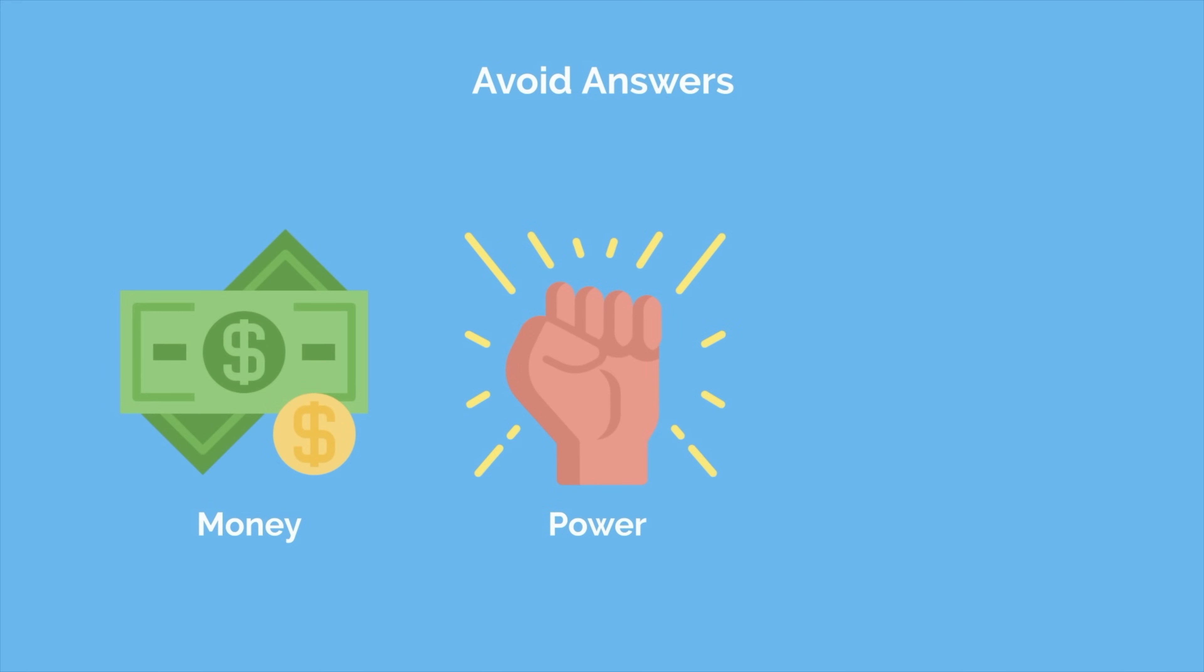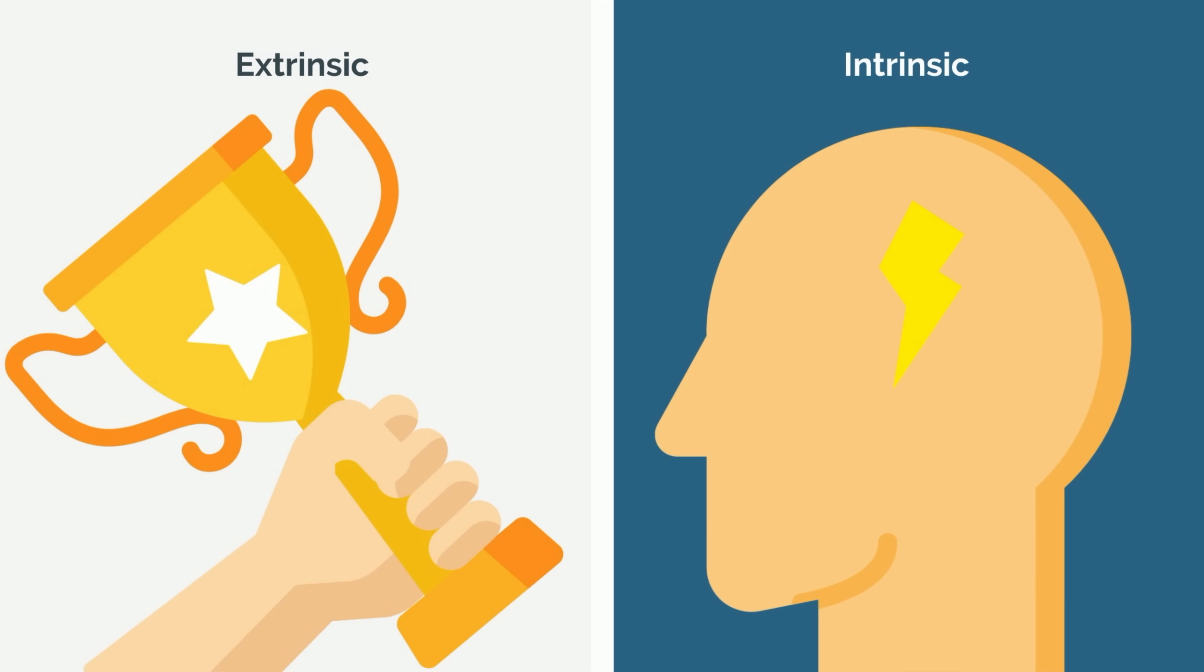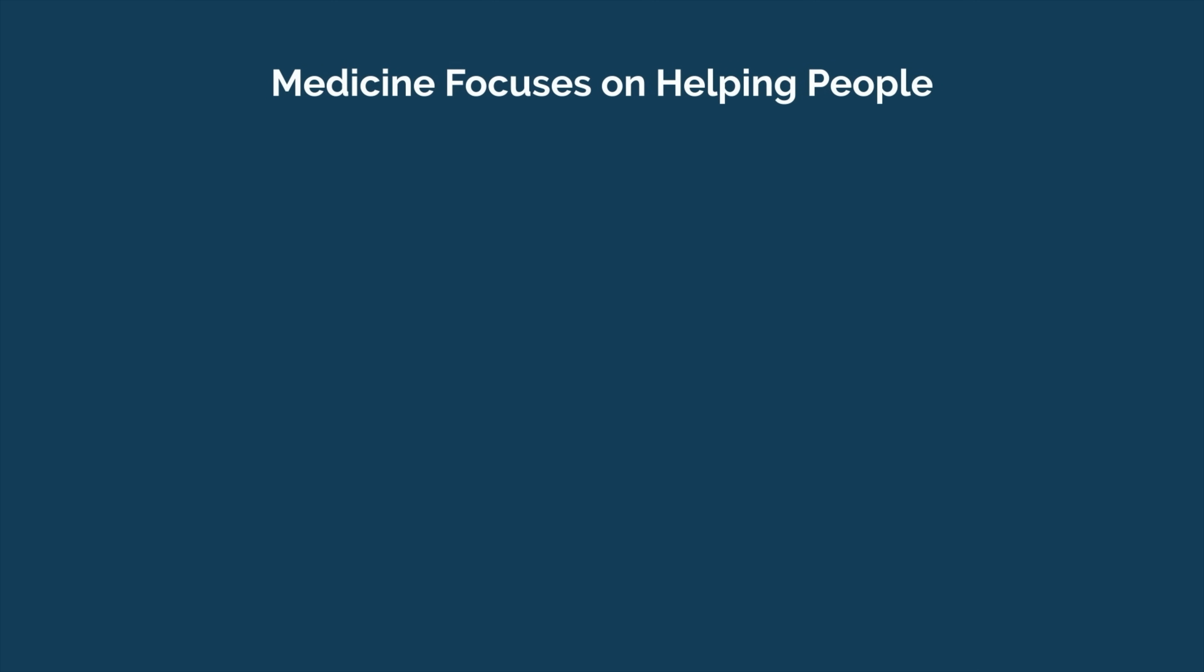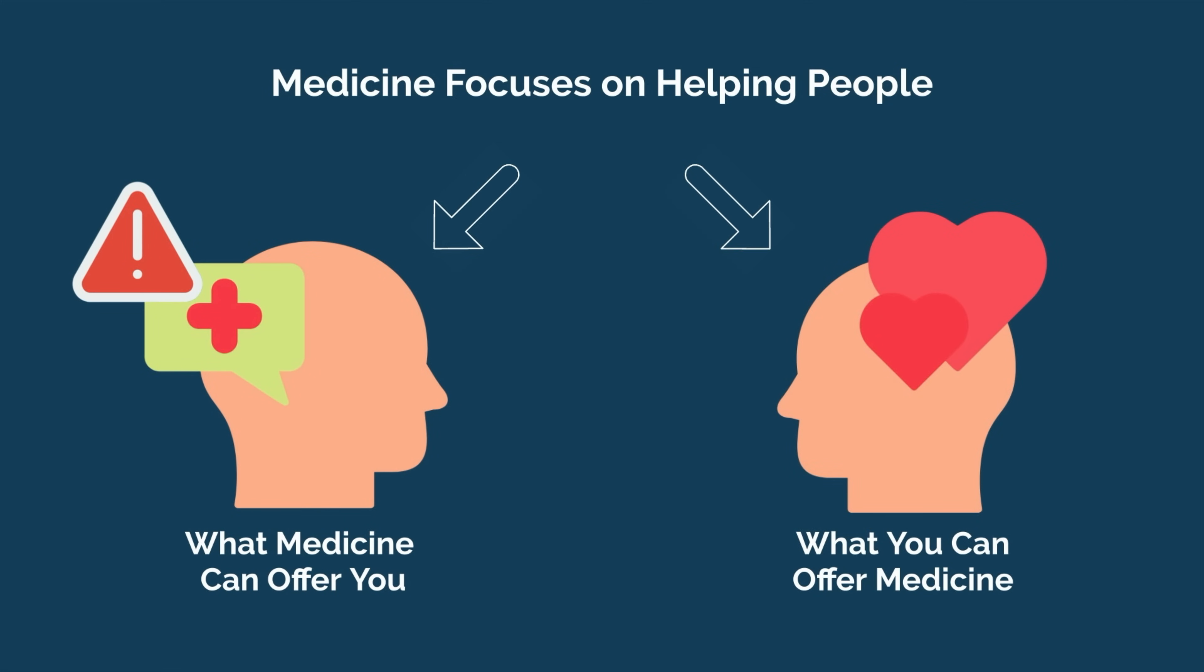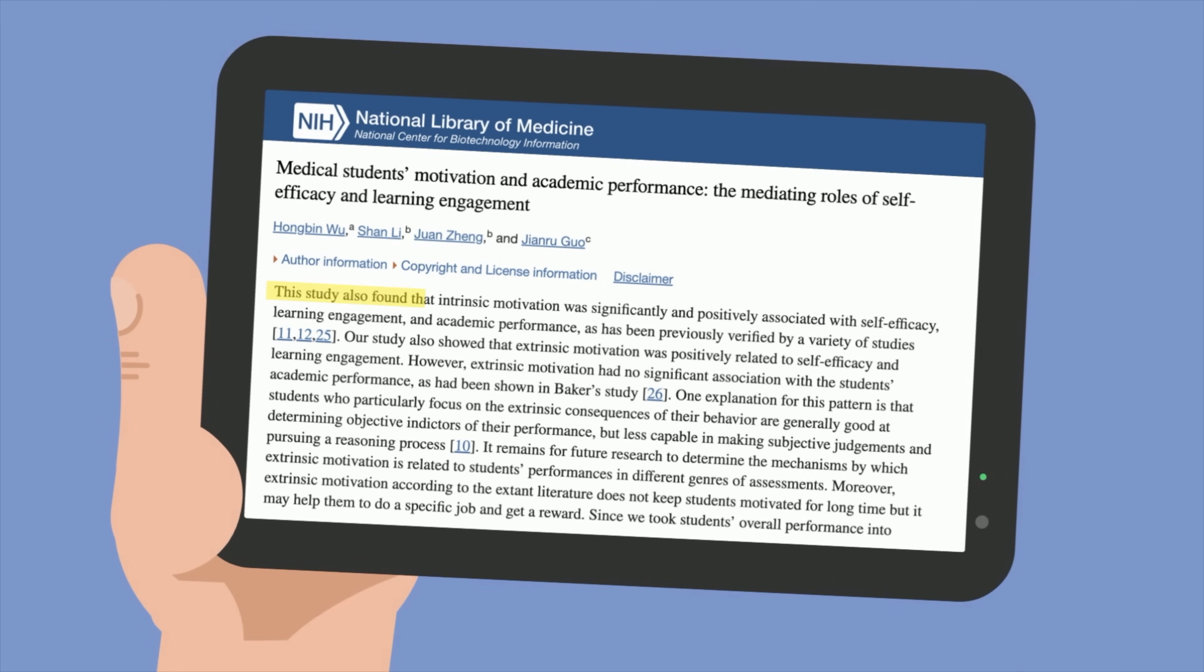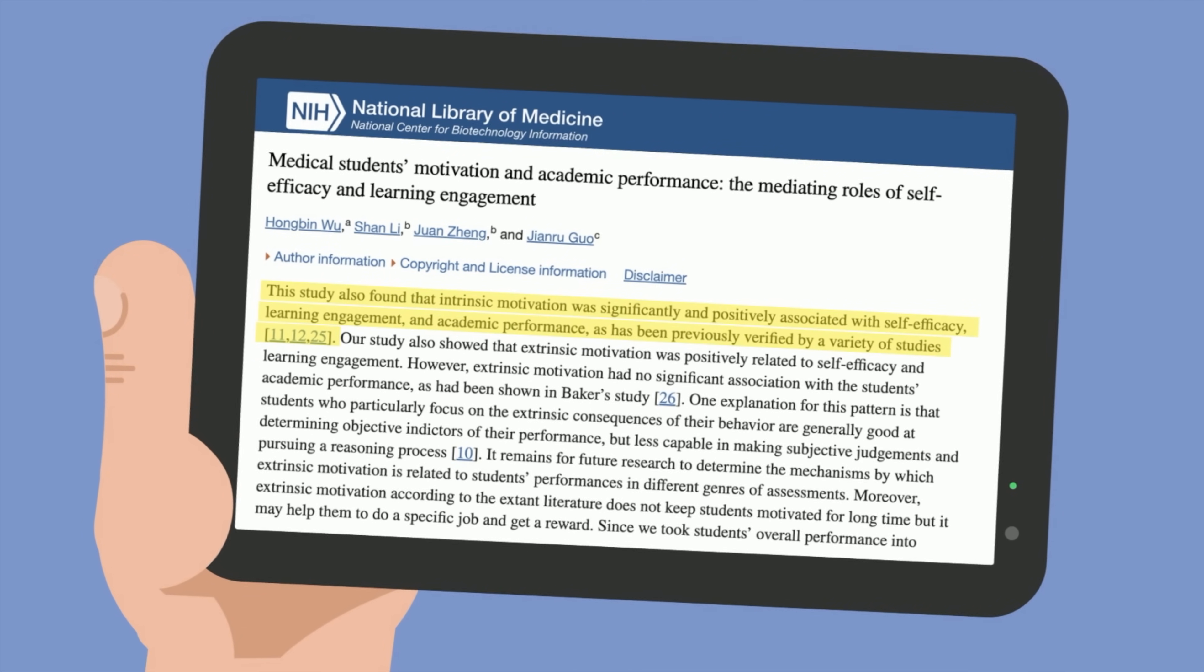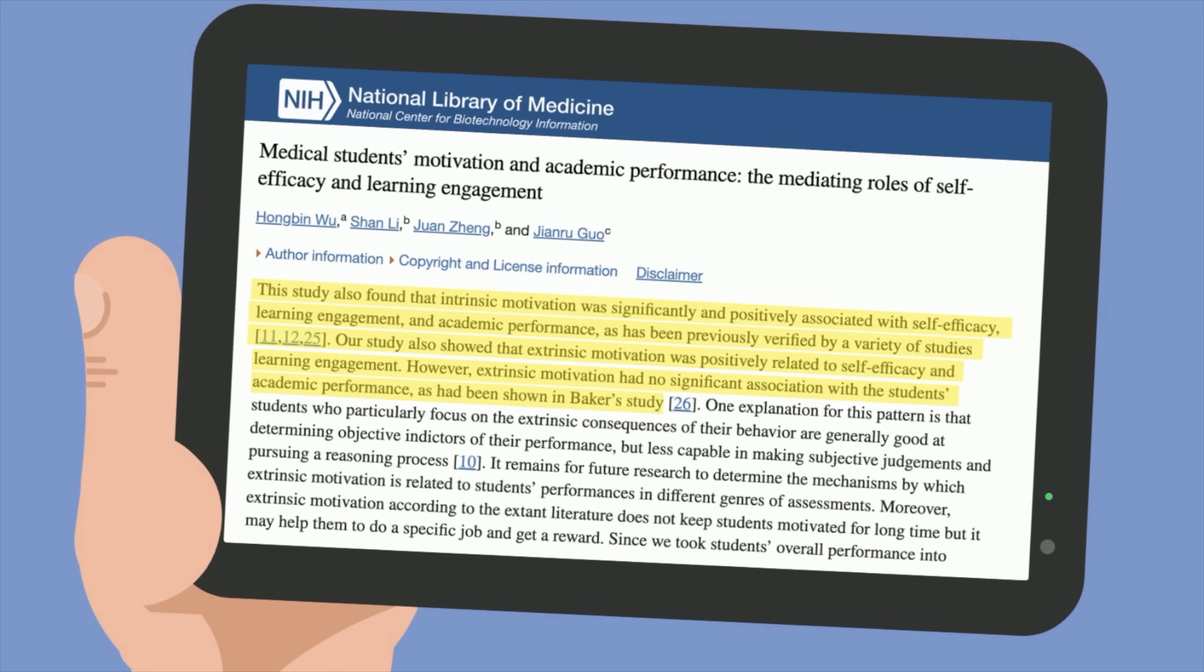Next, avoid answers that involve money, power, or respect. These responses indicate that your reasons for pursuing medicine are extrinsic, meaning that they come from external sources instead of internal ones. Although these reasons may be involved in your decision to become a physician, they can come across as selfish and lead interviewers to question your commitment to medicine. Being a doctor is a field focused on helping people. As such, your response shouldn't be focused on what medicine can offer you, but what you can offer the field of medicine and ultimately your future patients. In addition, research has shown that intrinsic motivations for becoming a doctor, such as enjoying the intellectual challenge of medicine, are correlated with increased academic performance, whereas extrinsic motivations had no significant association with a medical student's academic performance.